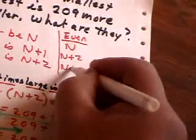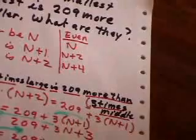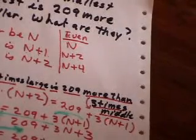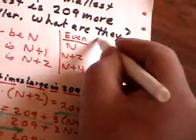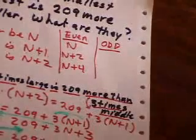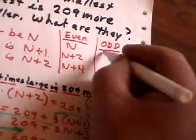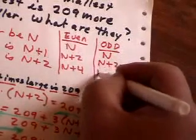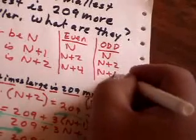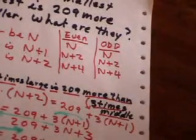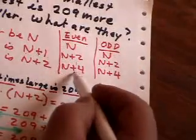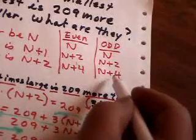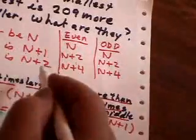So your original setup would look like n, n plus two, n plus four. If they say consecutive odd integers, well, odd integers are also two apart. So therefore we'd set it up the same way. The smallest is n. The middle is two higher than the smallest. And the larger is four higher than the smallest. So if they say the words consecutive even, you use this column. Consecutive odd, that column. If they just say consecutive integers, you use this column.